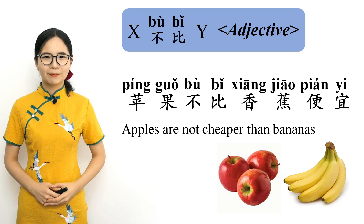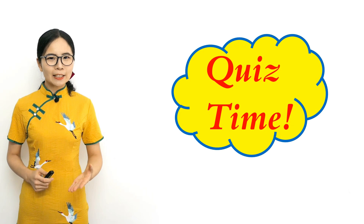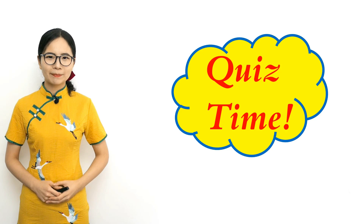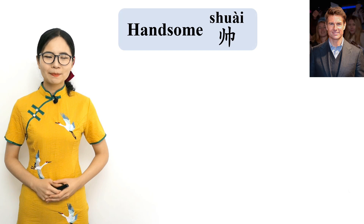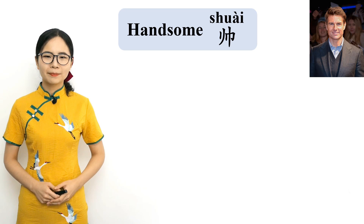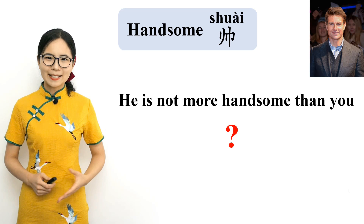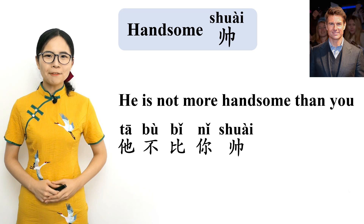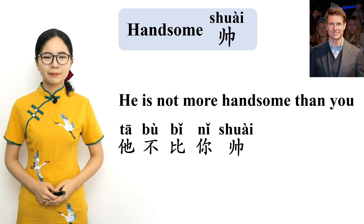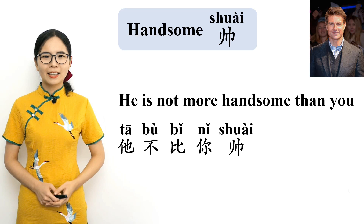OK, let's have a quiz. I'll tell you the adjective to use for the comparison, and then you tell me how to say the sentence in Chinese. The Chinese word for handsome is 帅. Please repeat after me. 帅 — handsome. How do you say 'he is not more handsome than you'? That's correct. 他不比你帅. Please repeat after me. He is not more handsome than you.